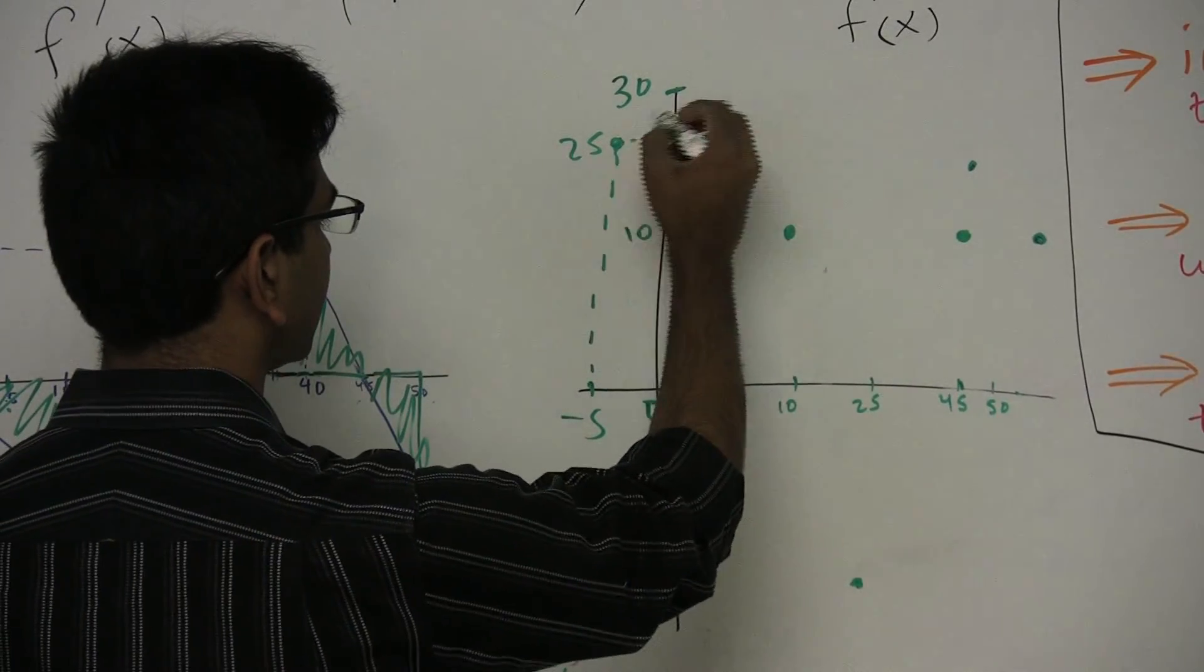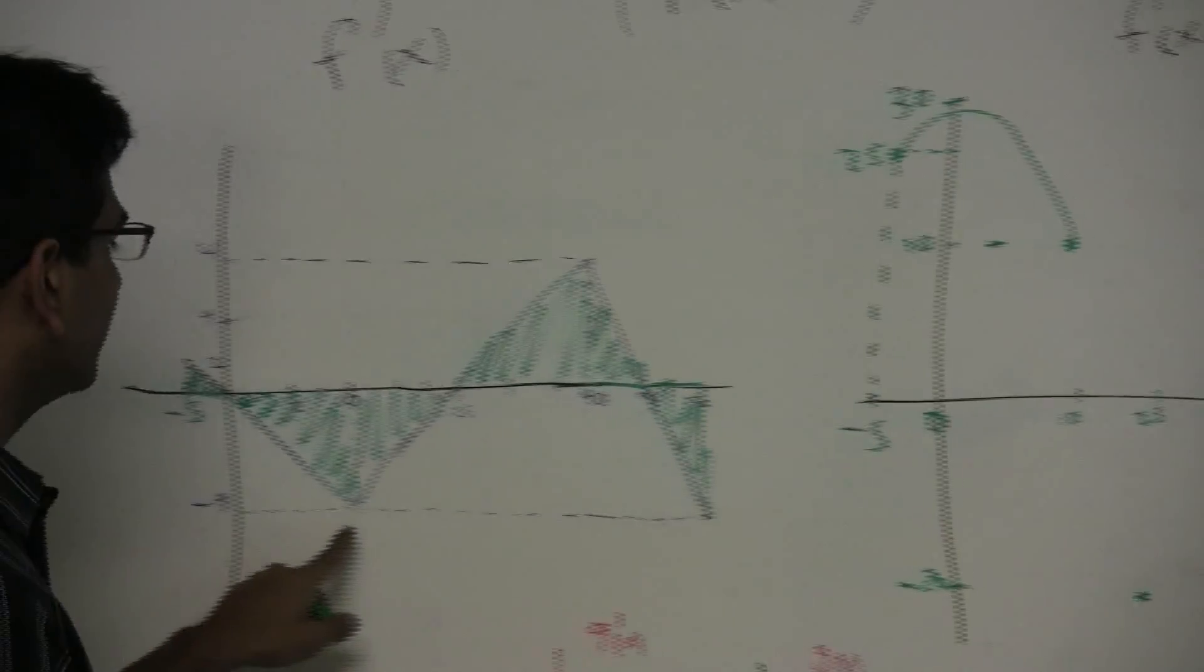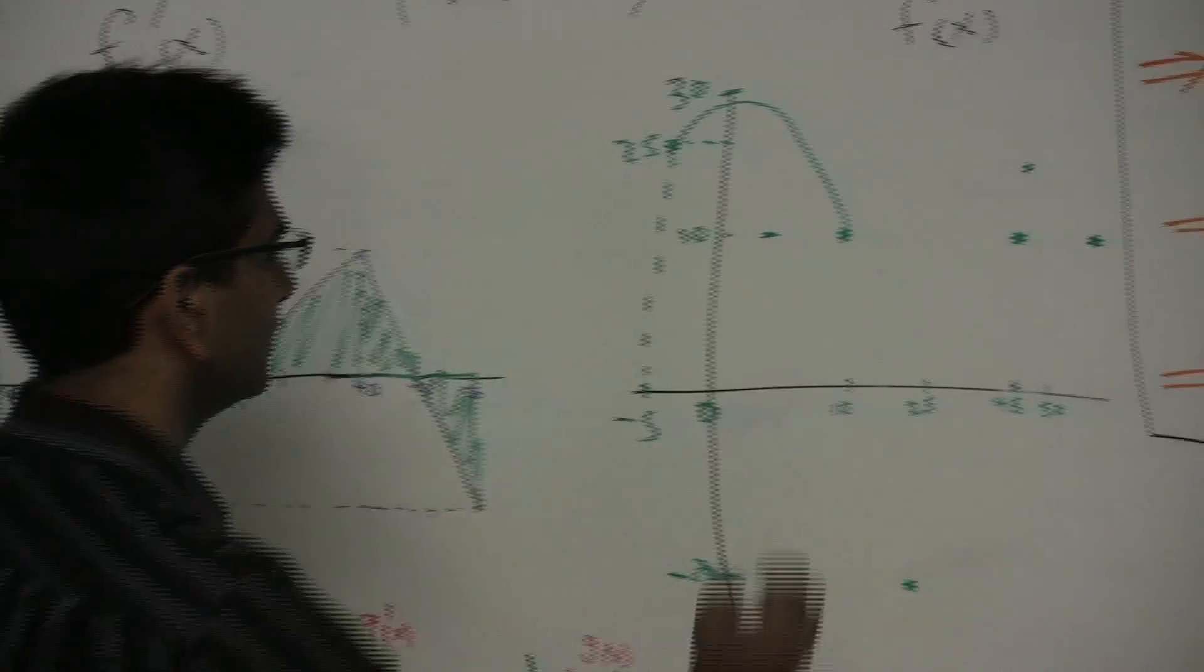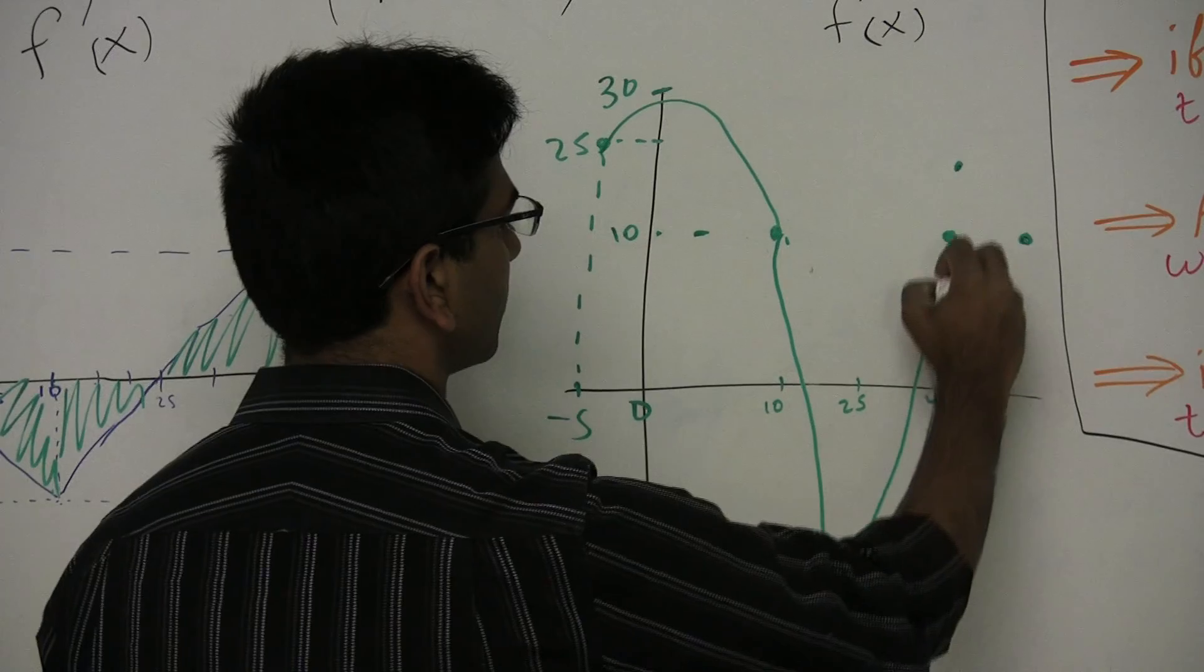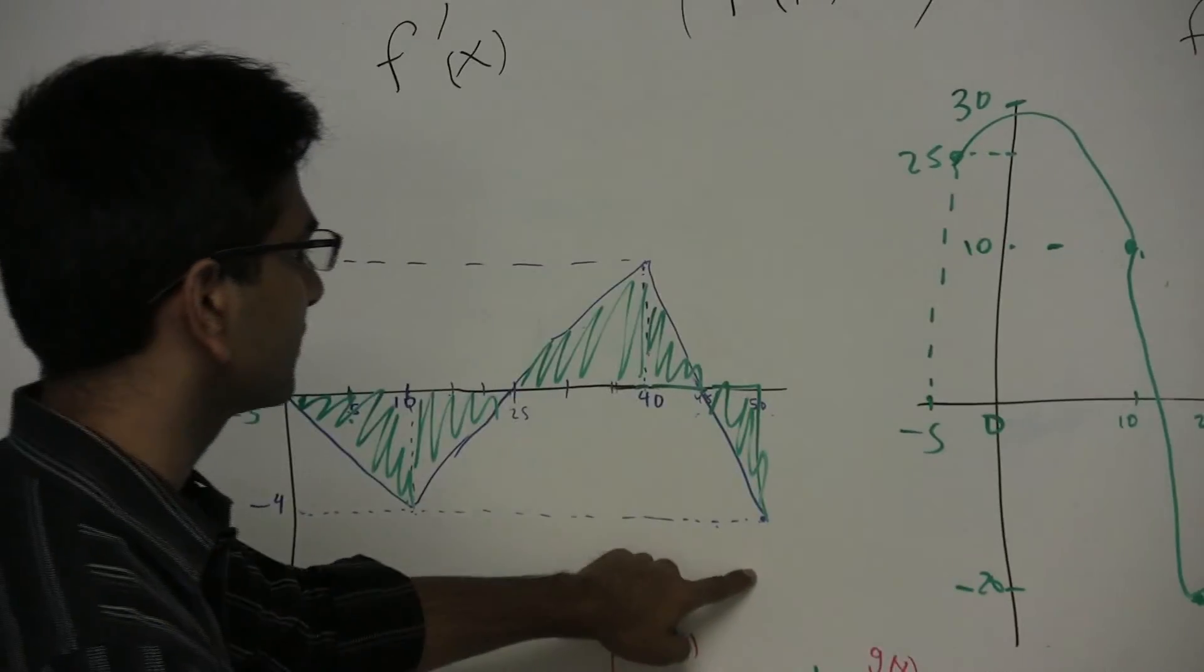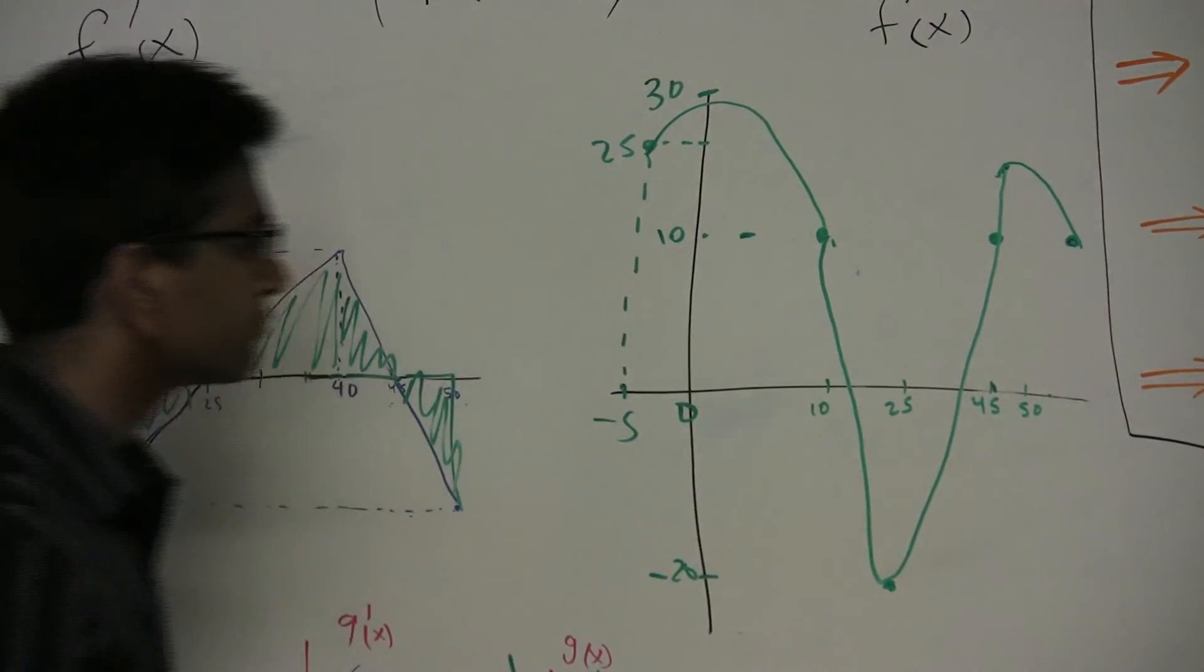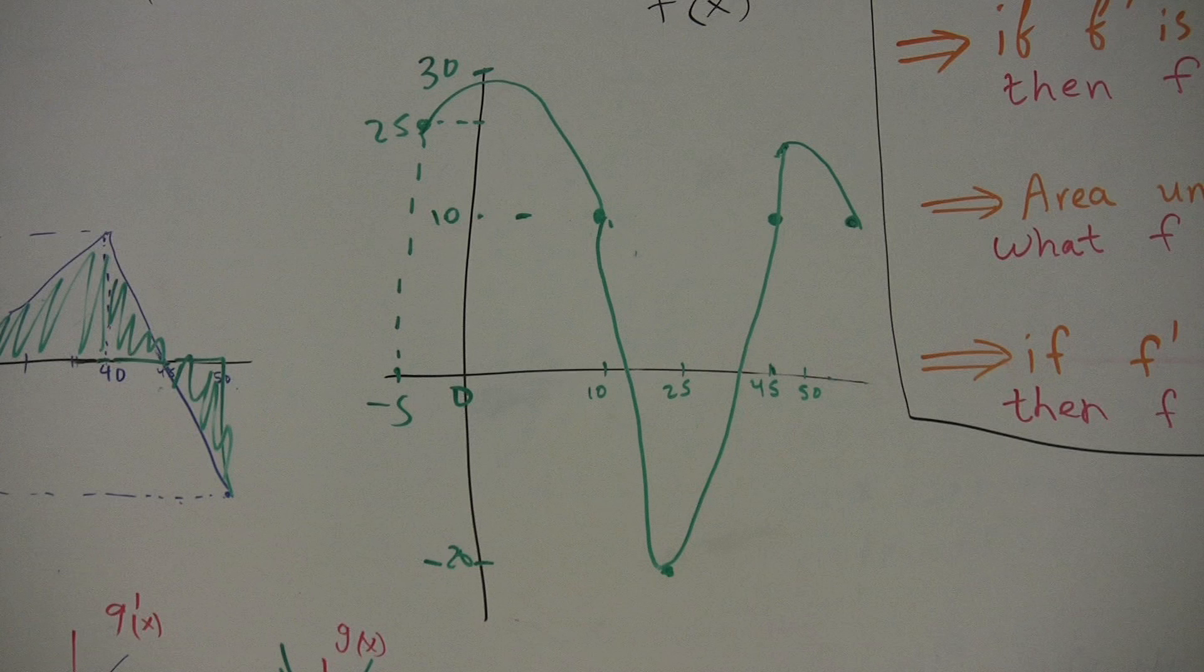So it's going to look like this. And now it's increasing between 10 and 40, so it's going to look like a smiley face. Notice that we have to make it pass through all the points that we've drawn. And finally, it's decreasing, so it's going to look like a sad face again. So this is what the graph of f will look like, based off of f prime of x.